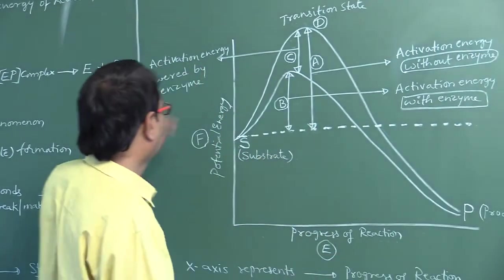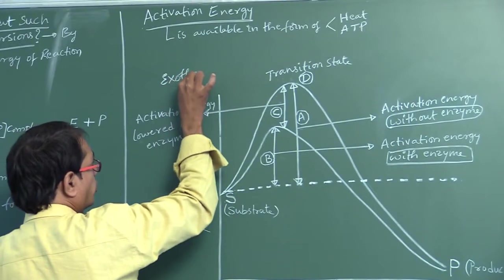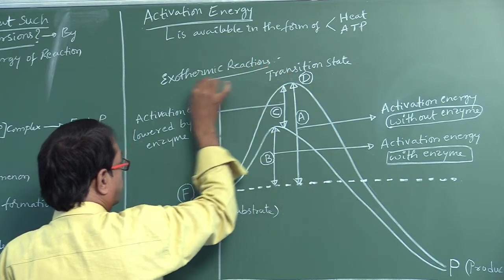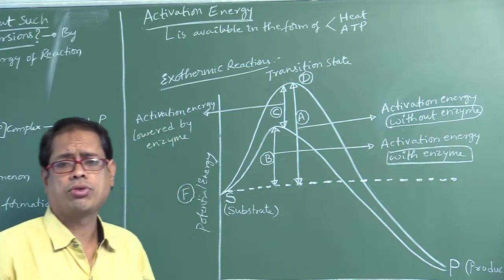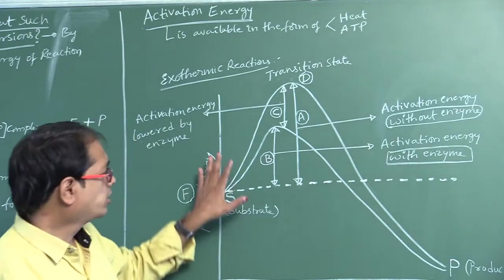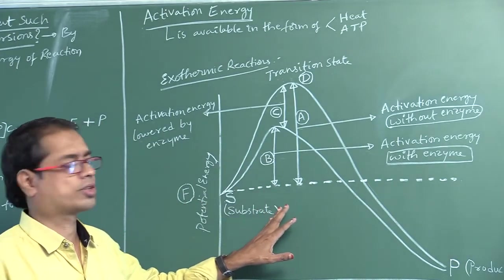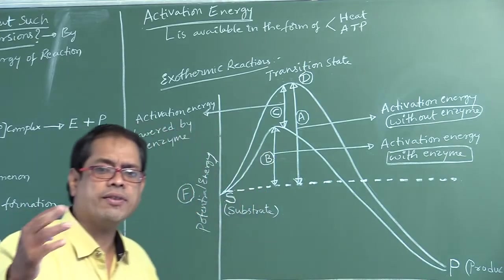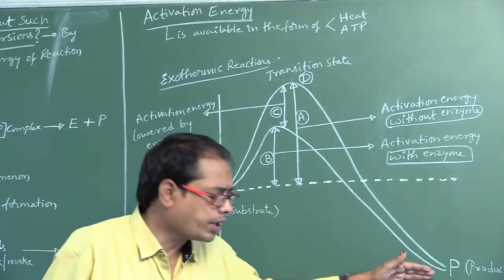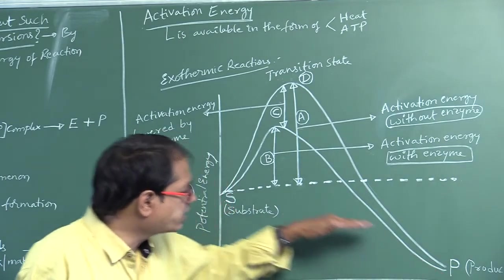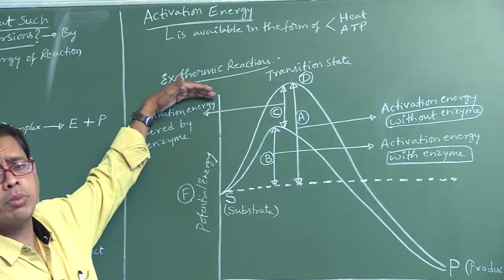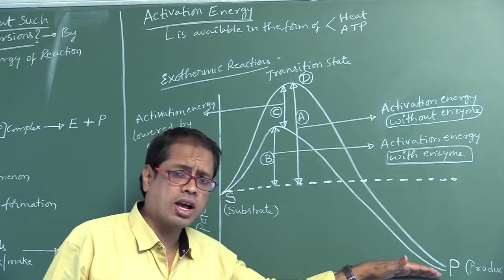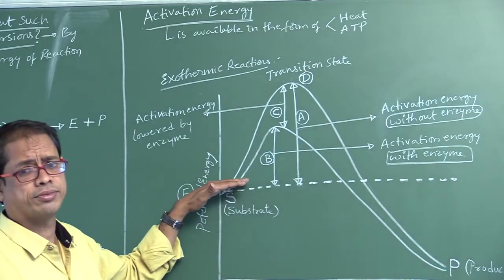Chemical reactions are of two types: exothermic reactions and endothermic reactions. Exothermic reactions are also called spontaneous reactions — energy is released. In the diagram of exothermic reactions, S is at a higher energy level than P. Products are at a lower level than substrate in exothermic reactions.